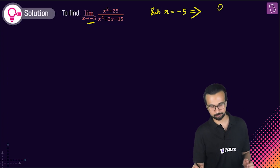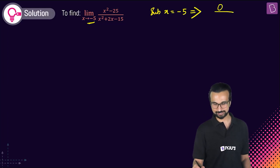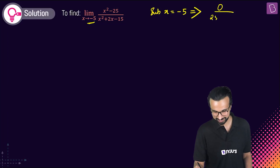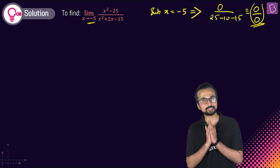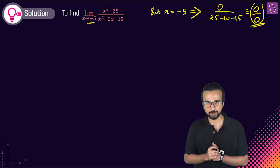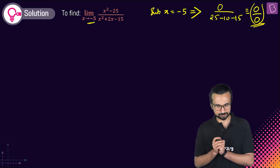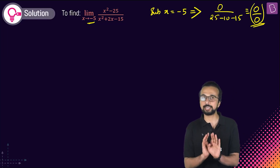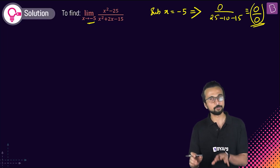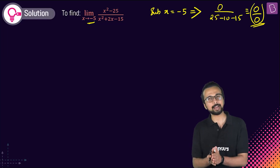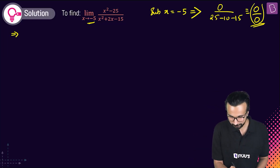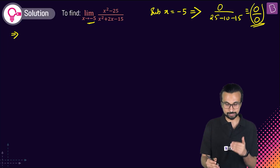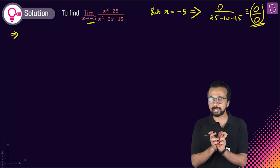Substituting x = -5 gives us zero in the numerator, and 25 - 10 - 15 = 0 in the denominator. So we get a zero by zero indeterminate form. The actual answer is hidden — we need to remove this indeterminate form by factorizing.